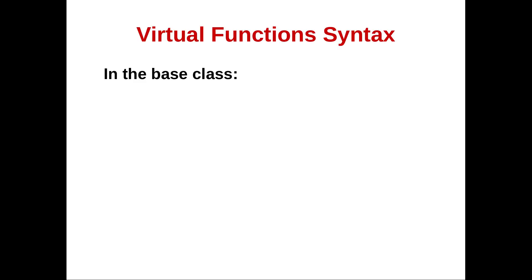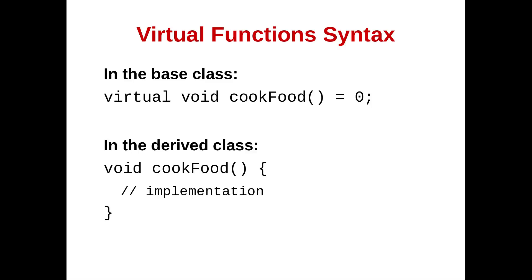Virtual function syntax: in the base class, it looks like this — `virtual void cook_food() = 0`. In the derived class, we have the implementation. In the header file, you also have to have `cook_food` declared there as well. And in the implementation you would write `DerivedClass::cook_food`.